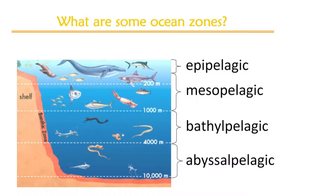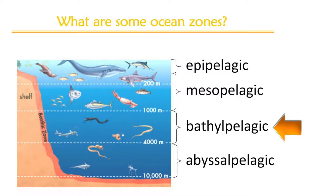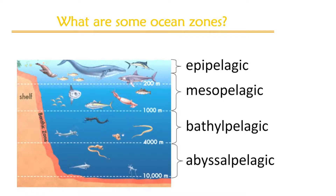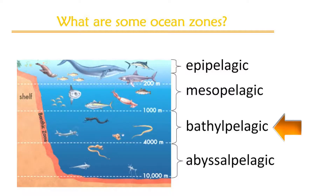Let's name the zones, the zones, the zones. What are some ocean zones? Epipelagic, mesopelagic, bathypelagic, abyssalpelagic. These are some ocean zones. Let's name the zones, the zones, the zones. What are some ocean zones? Epipelagic, mesopelagic, bathypelagic, abyssalpelagic. These are some ocean zones.